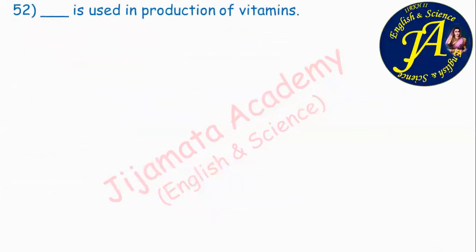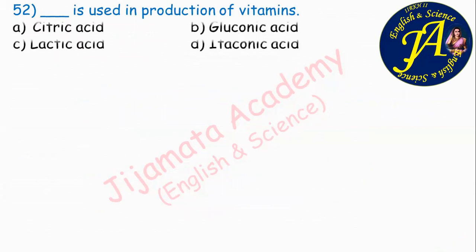Dash is used in production of vitamins. Options are citric acid, gluconic acid, lactic acid, itaconic acid. Correct answer is option C: lactic acid. Lactic acid is used in production of vitamins.